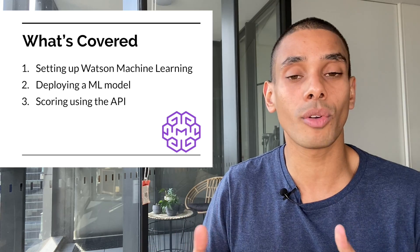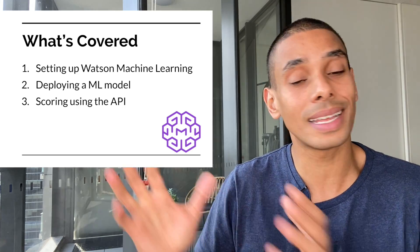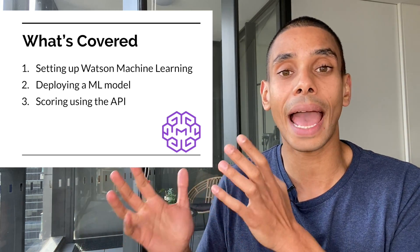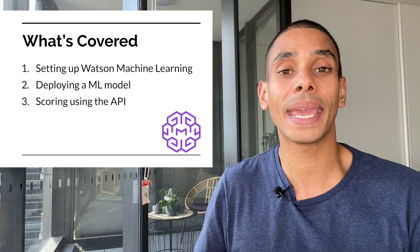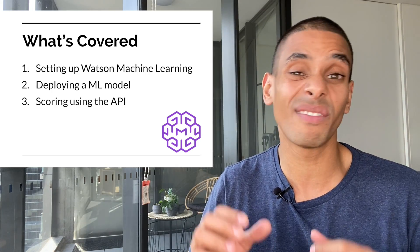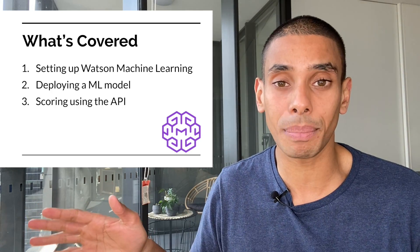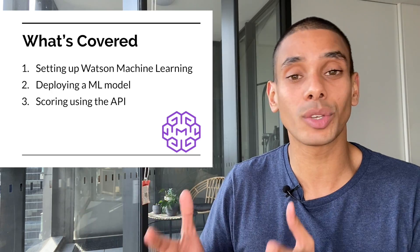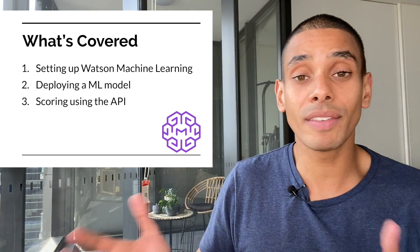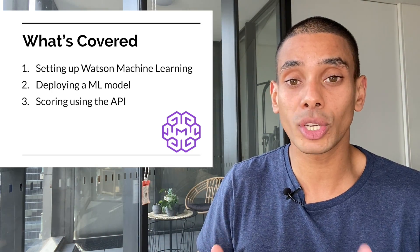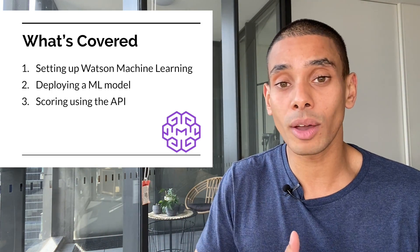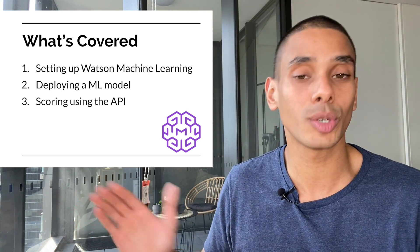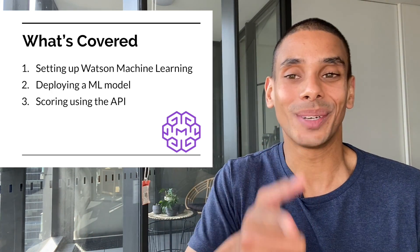This is going to mean that later on when we get into the next part of the series where we start building our machine learning app, we're going to be able to use this deployed endpoint in virtually any application. When we build our machine learning app, we'll be building it using Node.js and React, and even though we've deployed our machine learning model in Python, we're going to be able to work with it in virtually any other language. Ready to get to it? Let's do it.